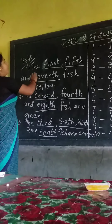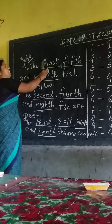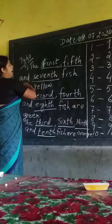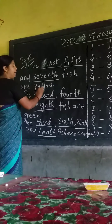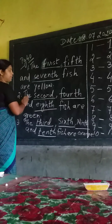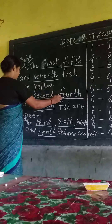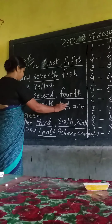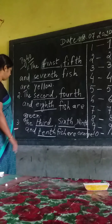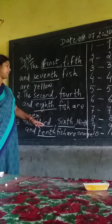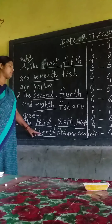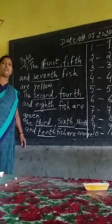Once again, please see: the first, fifth, and seventh fish are yellow. The second, fourth, and eighth fish are green. The third, sixth, ninth, and tenth fish are orange.